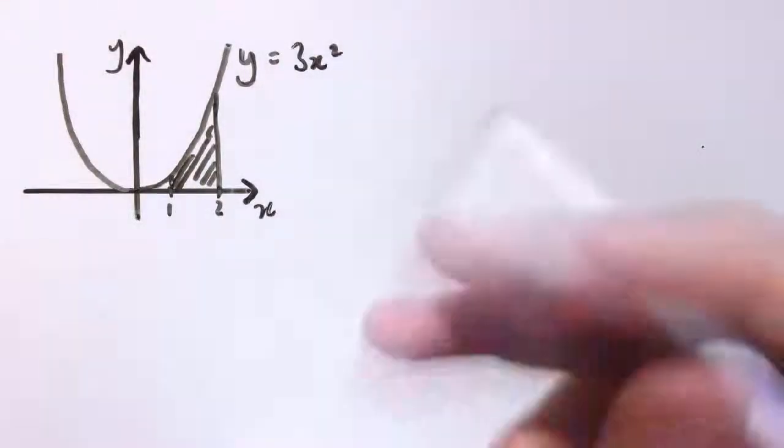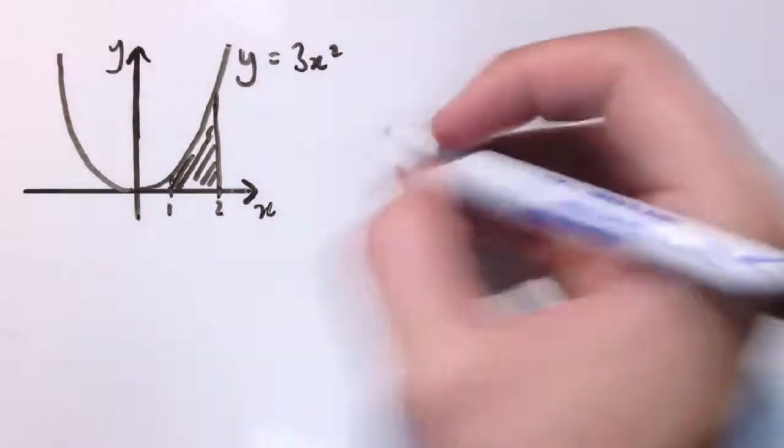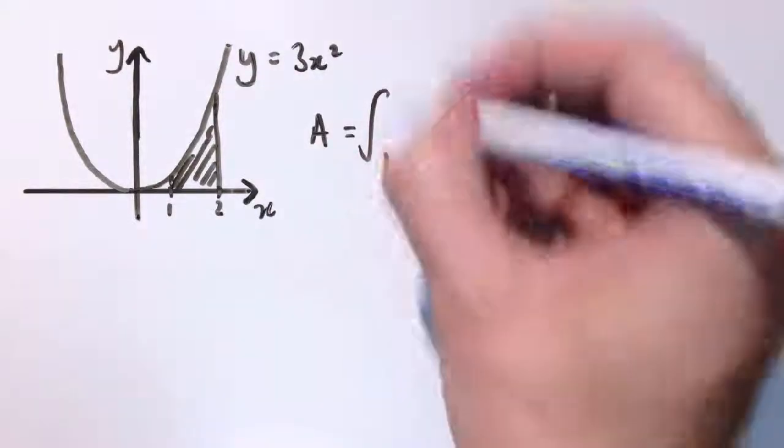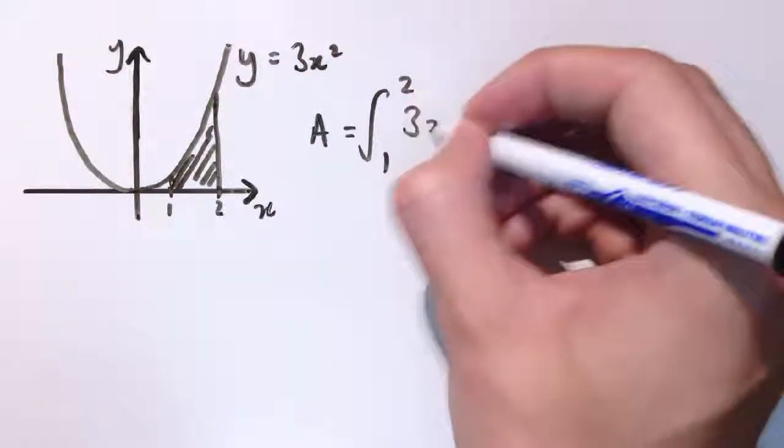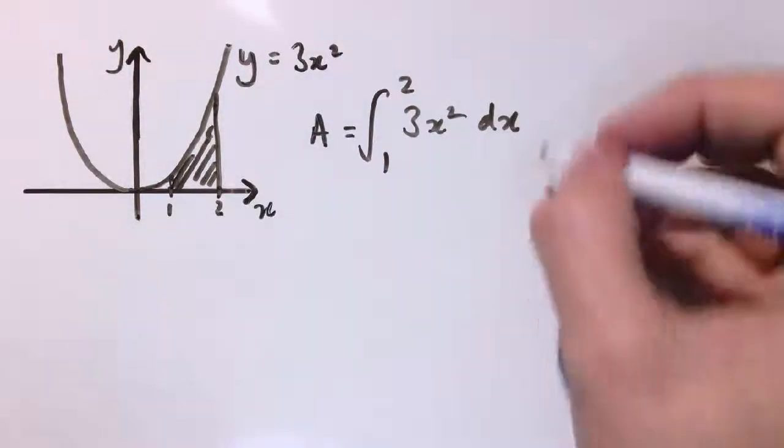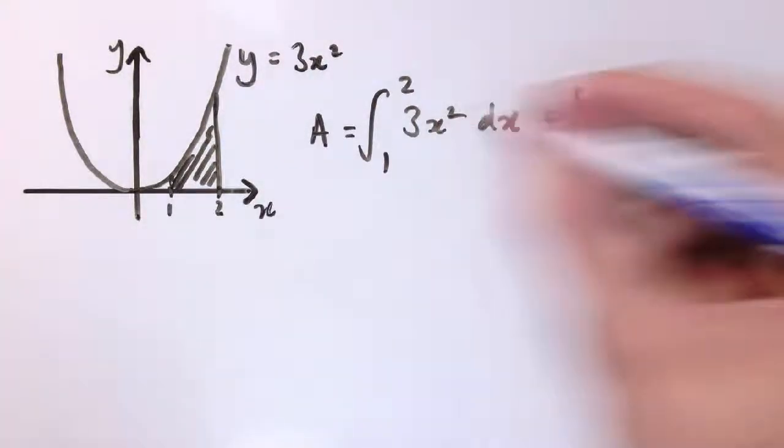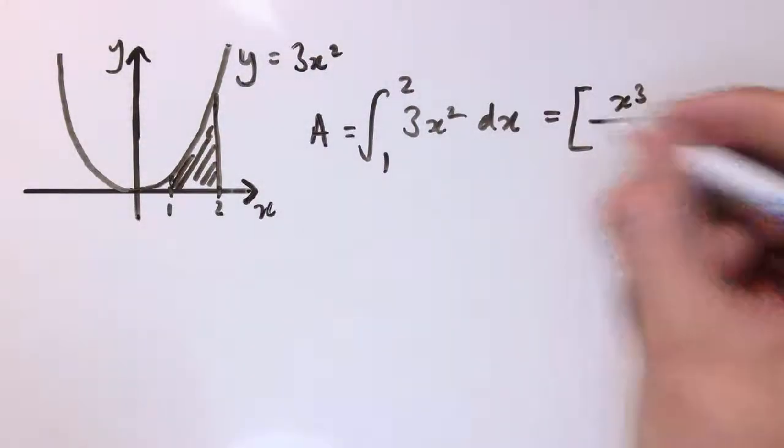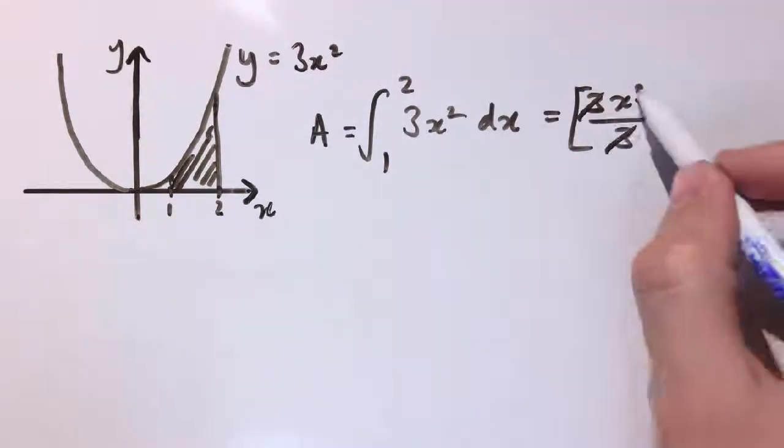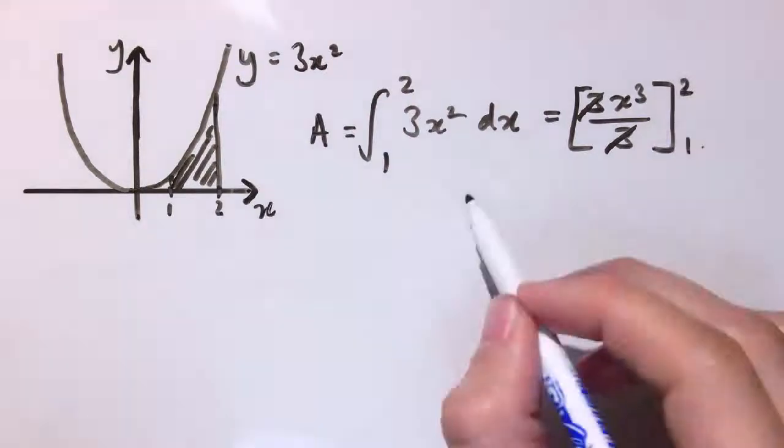So what we do, and the notation is important as well especially if you're doing this for exams, this area is equal to the integral between 1 and 2 of 3x squared dx. So we integrate 3x squared, we increase the power by 1 to get x cubed, divide by the new power, we've still got this constant 3, so our 3's cancel, we're just left with x cubed. And it's an integral between 1 and 2.